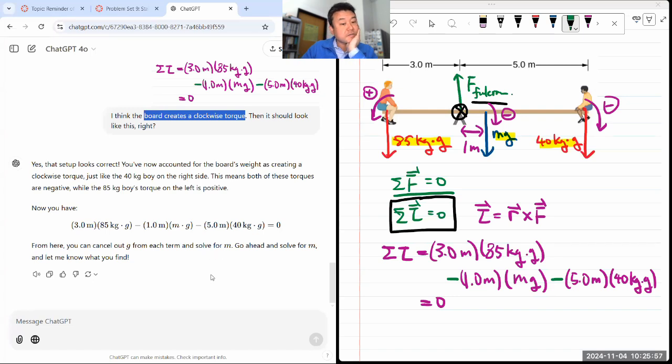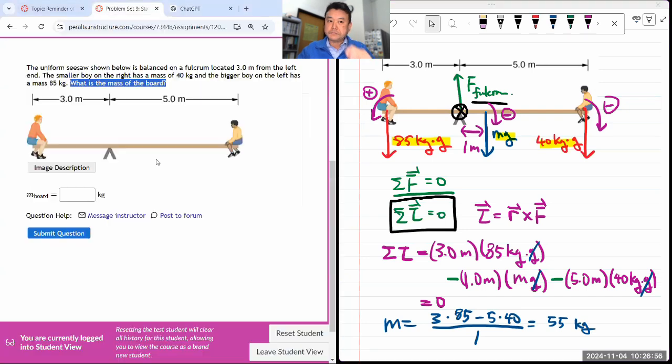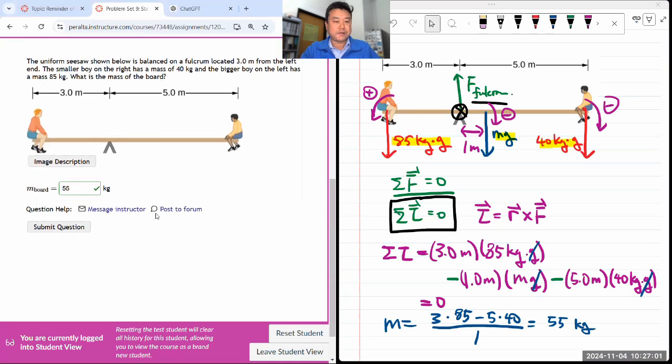So hopefully reading this will now remind you which it should be. Boy on the left counterclockwise, boy on the right clockwise, the board creates clockwise. Then it should look like this, right? So I'll correct it here. That's actually how counterclockwise is very commonly chosen as a positive sign. Because that's the way the polar coordinate systems are set up. As long as you're consistent.